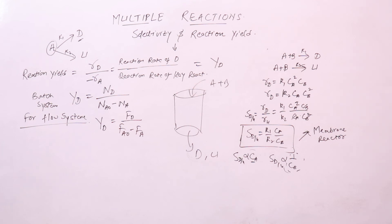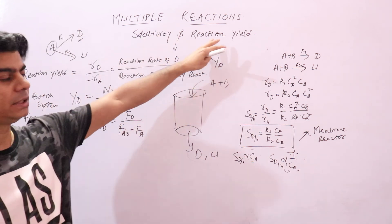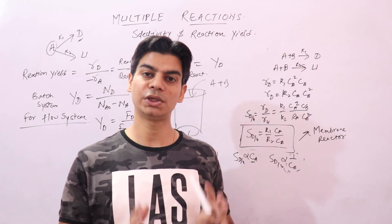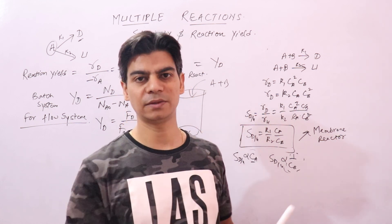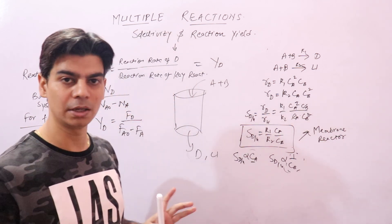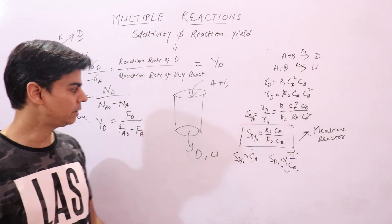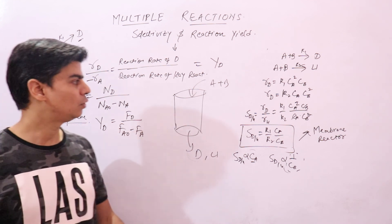To summarize: selectivity and reaction yield help a chemical engineer save cost and select the correct, suitable reactor to perform a specific reaction, achieving maximum desired product and minimum undesired product. Remember: for batch systems, always use number of moles; for flow systems, use molar flow rates. I hope this is clear — thanks.